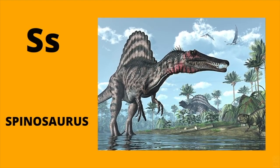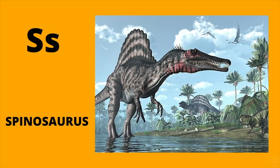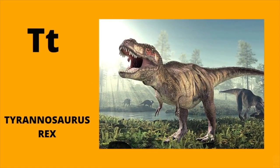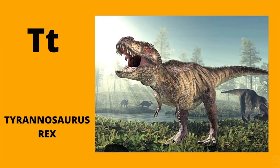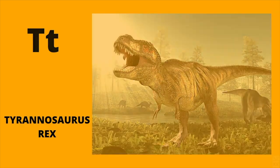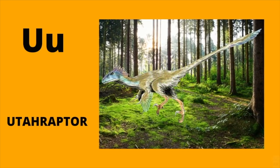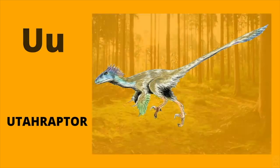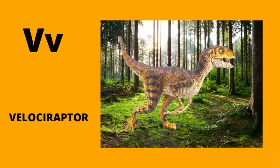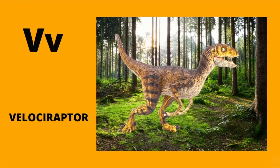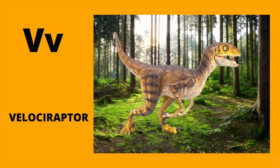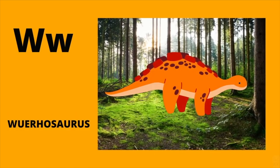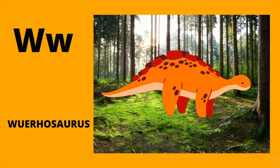S is for Spinosaurus. S, Spinosaurus. T is for Tyrannosaurus Rex. T, Tyrannosaurus Rex. U is for Utahraptor. Y, Utahraptor. V is for Velociraptor. V, Velociraptor. W is for Wuerhosaurus. W, Velociraptor.